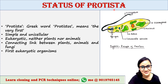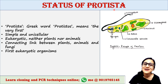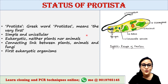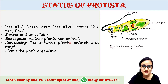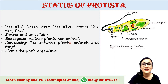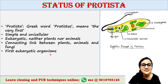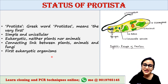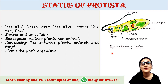These three kingdoms diverged from a common protist-like ancestor billions of years ago. So plants, animals, and fungi have all derived from a protist-like ancestor. Therefore, protists are considered the first eukaryotic organisms. Here we can see an example of a protist — that is Euglena.